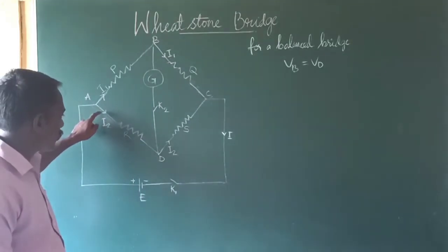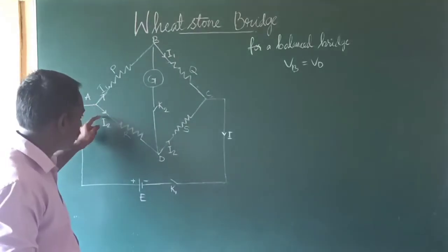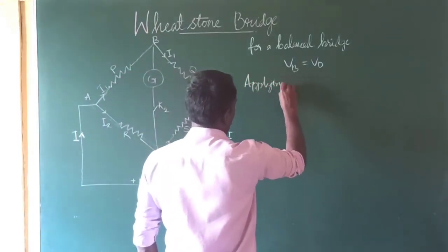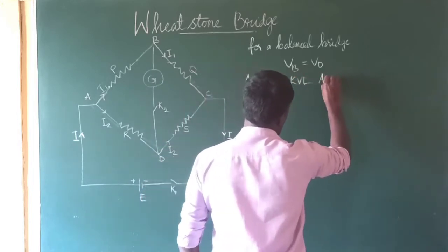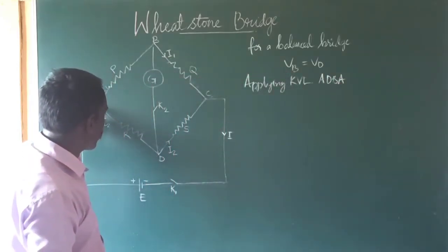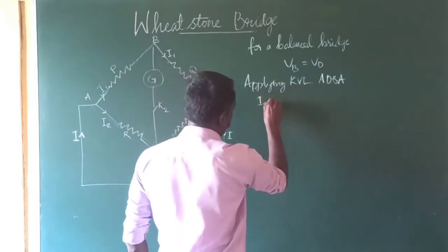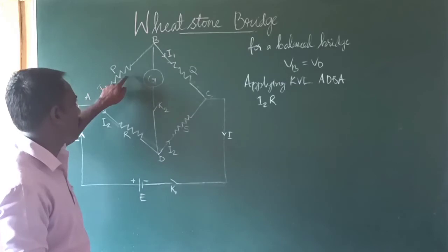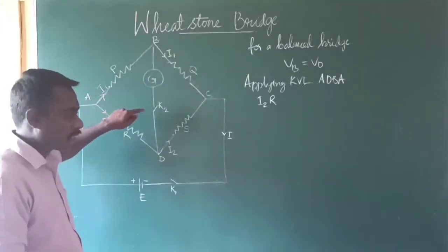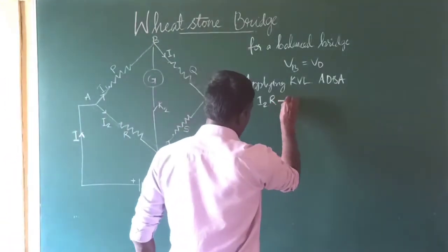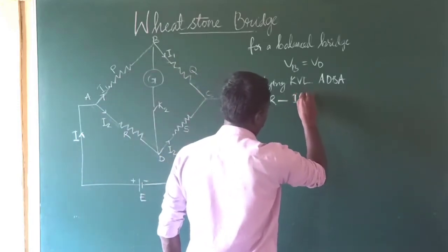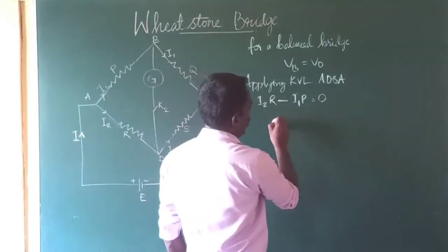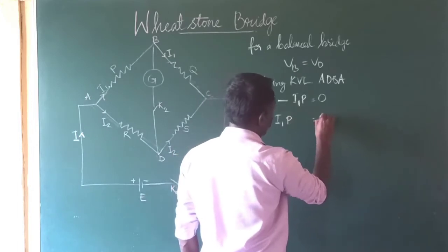Applying Kirchhoff's voltage loop in loop A, D, B, A: the voltage drop across resistor R is I2·R, plus the voltage drop across resistor P from B to A, which is opposite to the direction of flow of electric current, so it is taken as negative — that is, minus I1·P. As per Kirchhoff's voltage law, the sum equals zero, giving us I1·P = I2·R. This is equation 1.